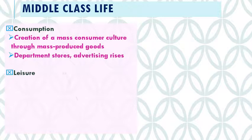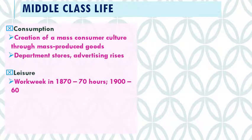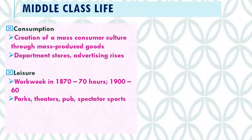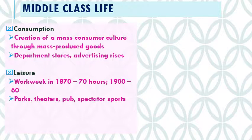When your work week goes from 70 hours in 1870 to 60 hours in 1900, you fill the time with trips to the park, strolling through Franklin Park, theaters, and pubs. The hot new thing in this period is spectator sports. After the Civil War we get the rise of boxing, baseball, the invention of basketball, and football. Golf takes hold, and bicycle riding — all of these become popular by the 1890s.